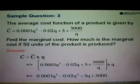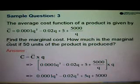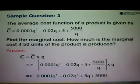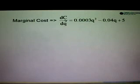So this is the function of cost. So we are asked to find the marginal cost. So remember marginal cost is equals to dc over dq. So we differentiate the function cost just now. We will get 0.0003q square minus 0.04q plus 5.